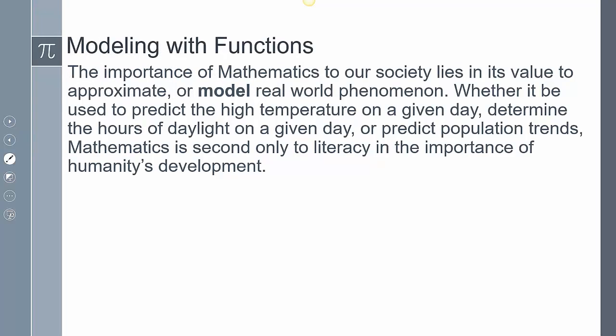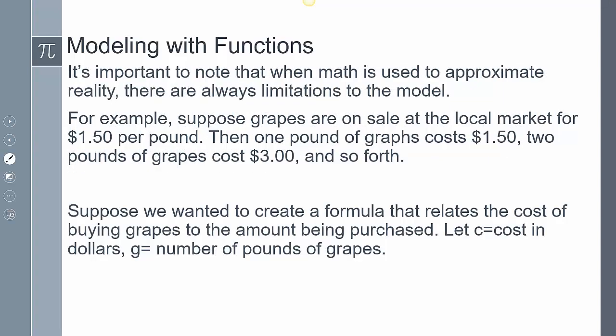Now the importance of mathematics to our society lies in the value to approximate or model real-world phenomenon. Whether it be used to predict the high temperature on a given day or determine the hours of daylight in a given day or predict population trends. Mathematics is second only to literacy and the importance of humanity's development. So a few things to note is we use this math to approximate reality. And when we're approximating this reality, there's always going to be limitations to this model.